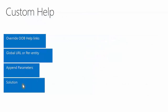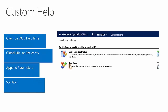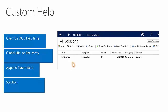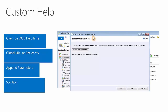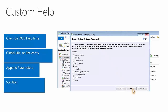The custom help, for the most part, can be provided as part of a solution. The custom help content can be created as a web resource in Microsoft Dynamics CRM, and those web resources are included in the solution along with the account entity which has the custom help URL defined. If the global help URL is defined, that can also be exported during the export solution wizard in the export system settings dialog.